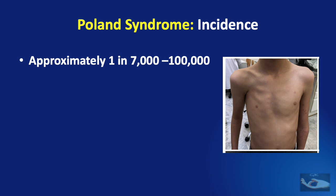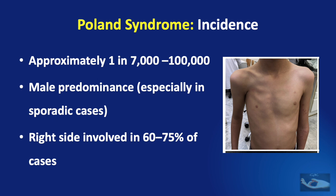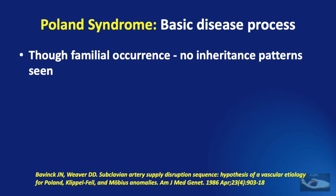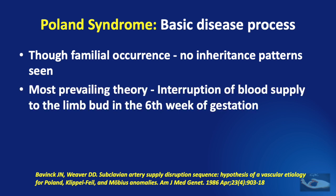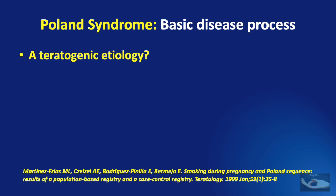The incidence of Poland syndrome is approximately 1 in 7,000 to 100,000 live births. There is a male preponderance, especially in sporadic cases, and the right side is involved in 60 to 75 percent of cases. Despite some familial occurrence, no inheritance patterns have been determined. The most prevailing theory focuses on interruption of blood supply to the limb bud in the sixth week of gestation, causing hypoplasia of the ipsilateral subclavian artery or one of its branches, determining the diversity of the defect. A teratogenic etiology has also been suggested, with an association with maternal smoking and cocaine use.